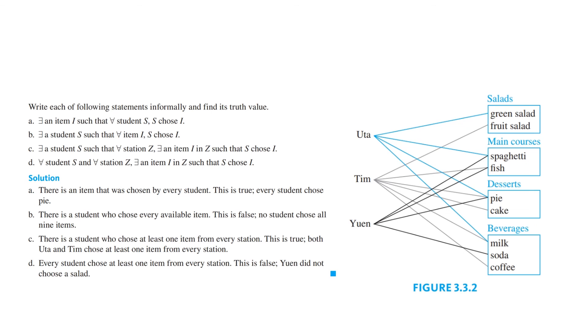B can be translated as, there is a student who chose every available item. Now, this is false because no student chose all nine possibilities. C: There is a student who chose at least one item from every station. This is true. Both Uta and Tim chose at least one item from every station. And D: Every student chose at least one item from every station.